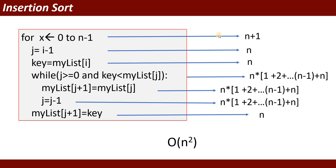Finally, here is the time complexity of insertion sort. The outer loop runs n+1 times. The inner j assignment runs n times. The key assignment runs n times. The while condition executes 1 + 2 + ... + (n-1) + n times. The inner body also runs the same number of times. When you calculate this summation, it gives a Big O of n squared. The time complexity of insertion sort is O(n²).